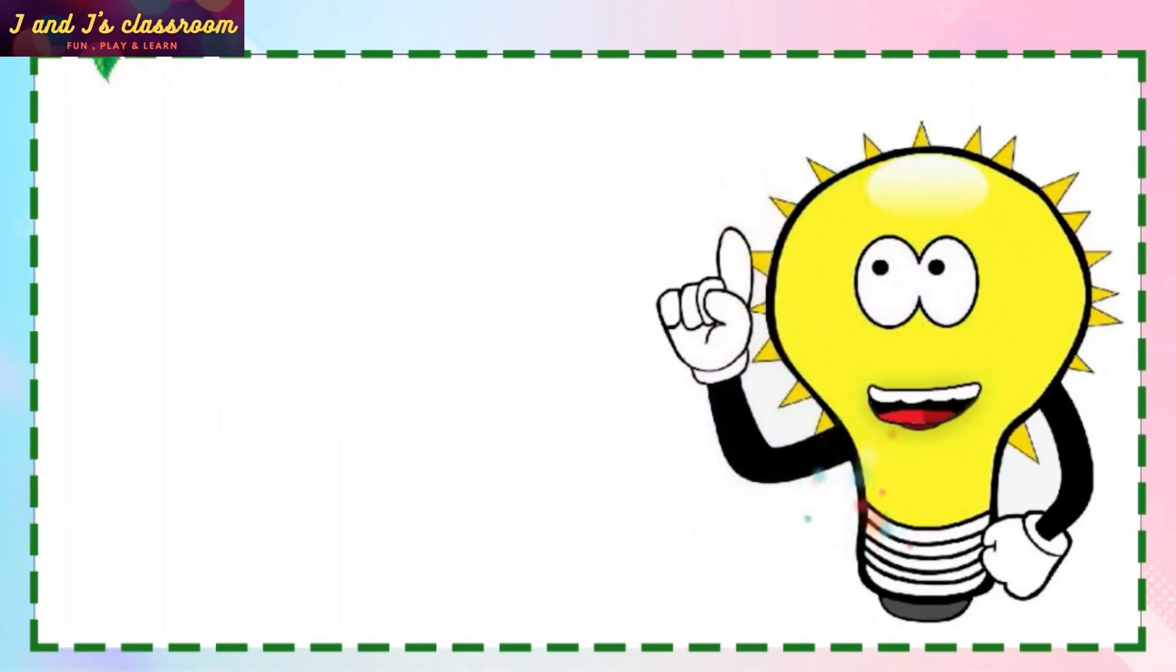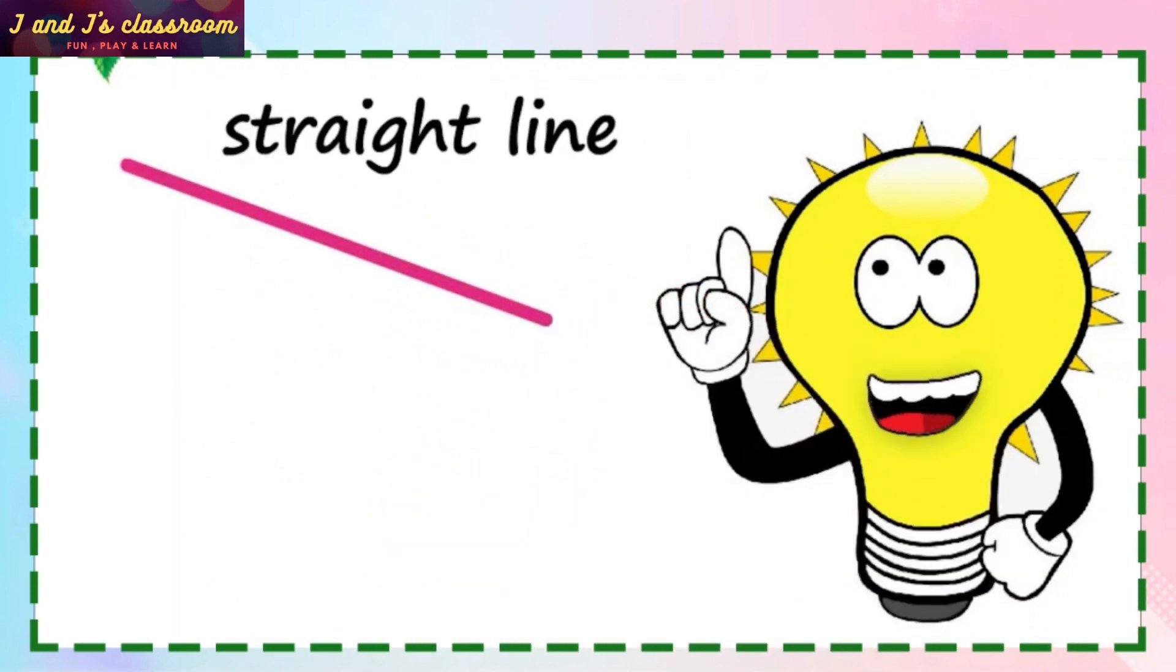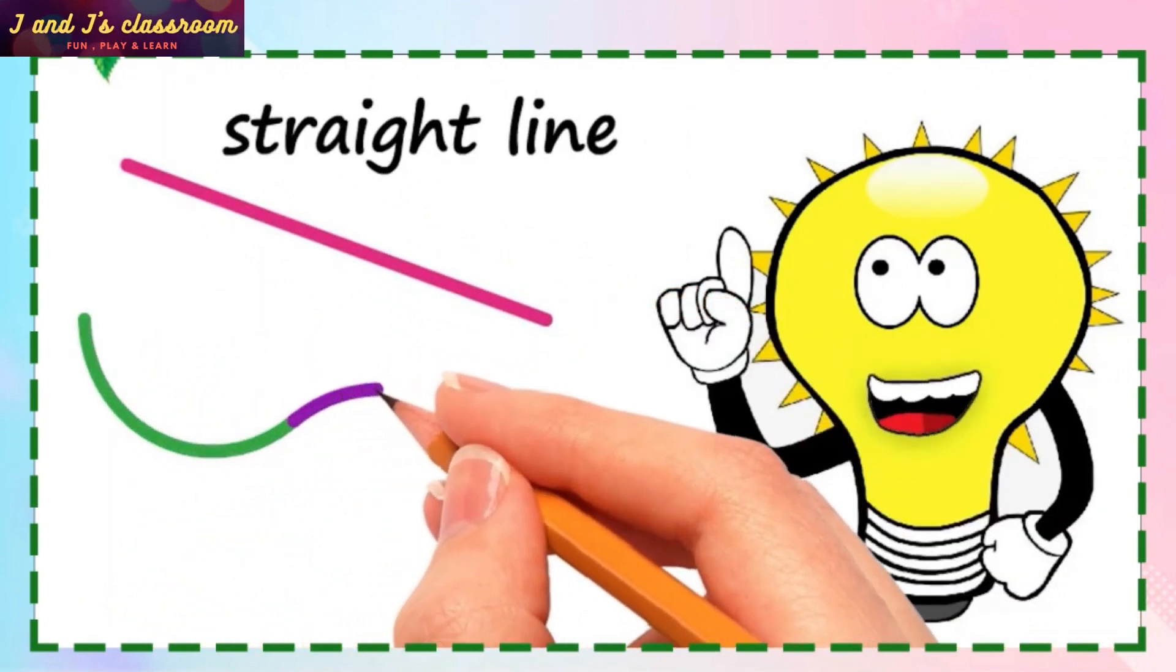Do you know children, this is a straight line and this is a curve line.